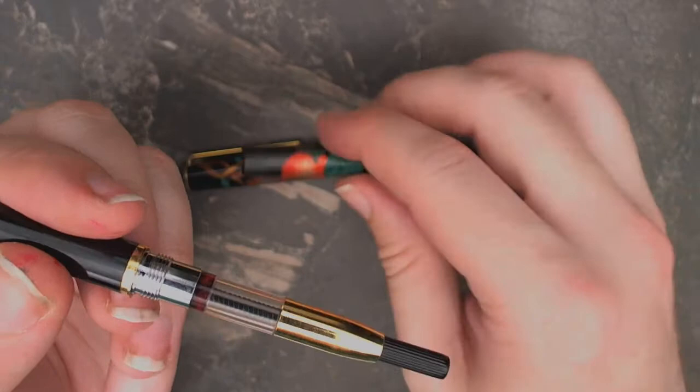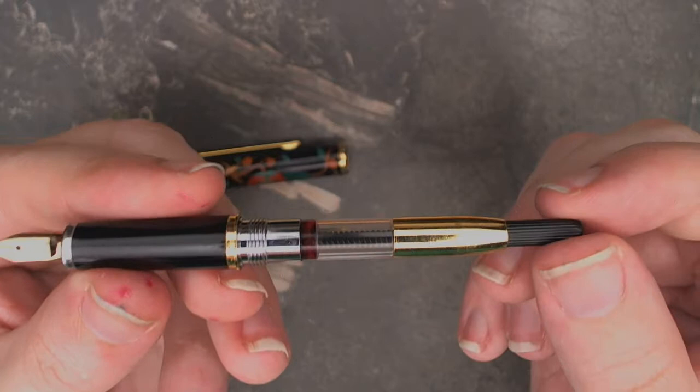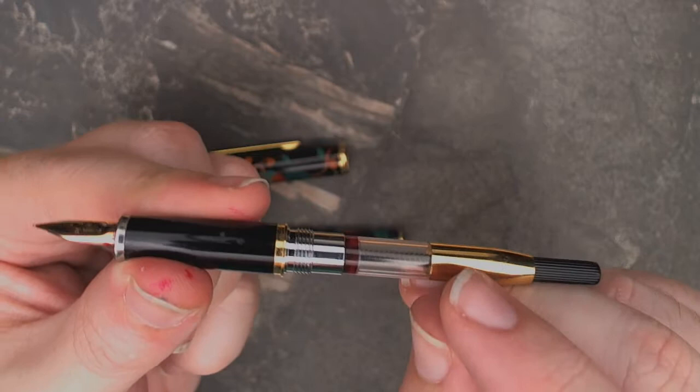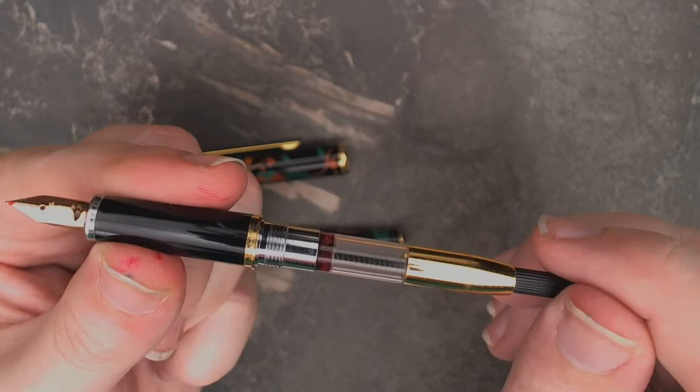That did come with a platinum converter. On some stores like Rakuten, they generally do not come with the converter. You might get a cartridge instead. So make sure you order one, otherwise you might just get a cartridge.